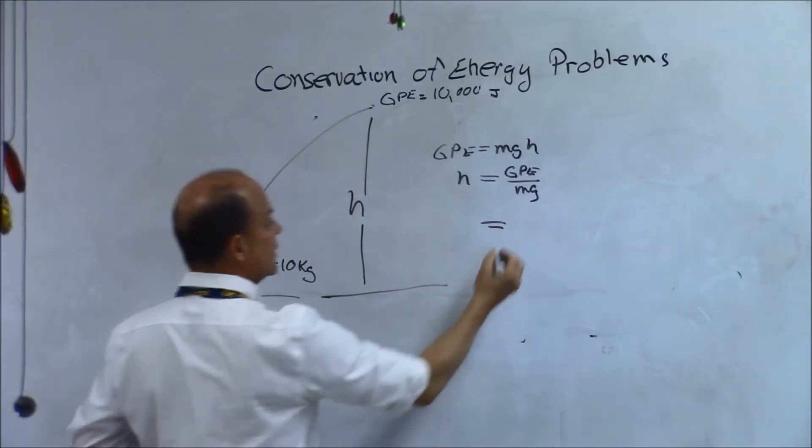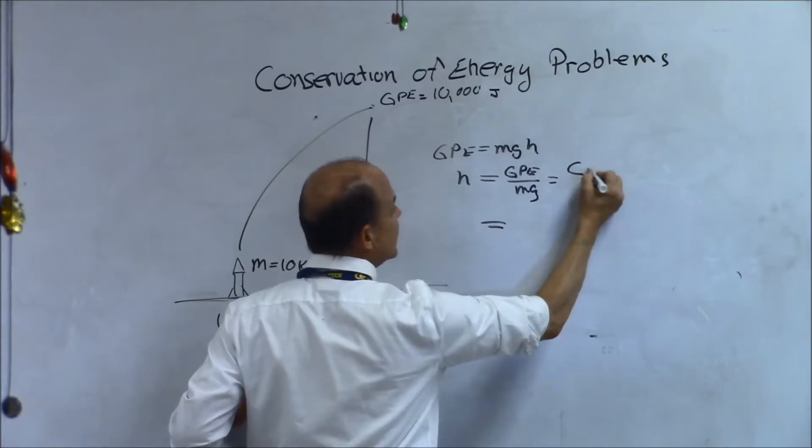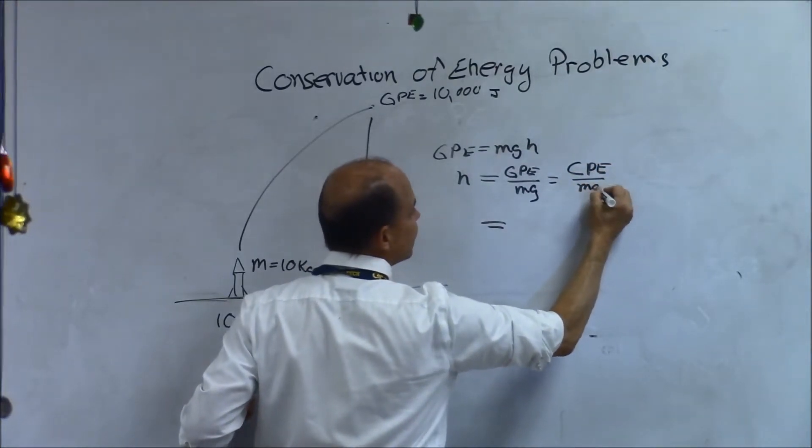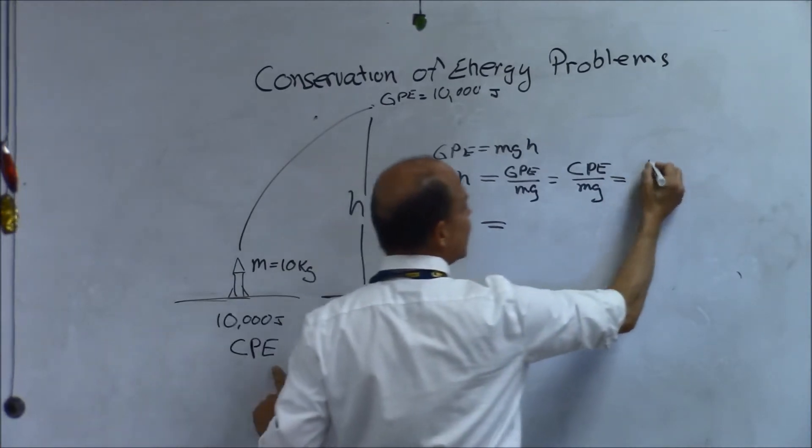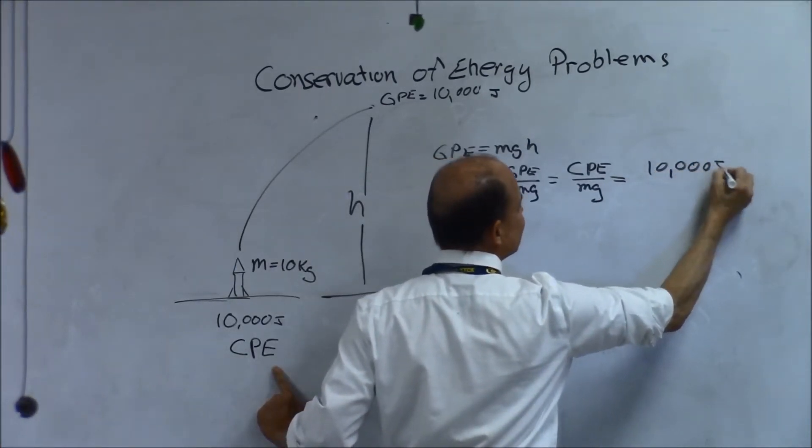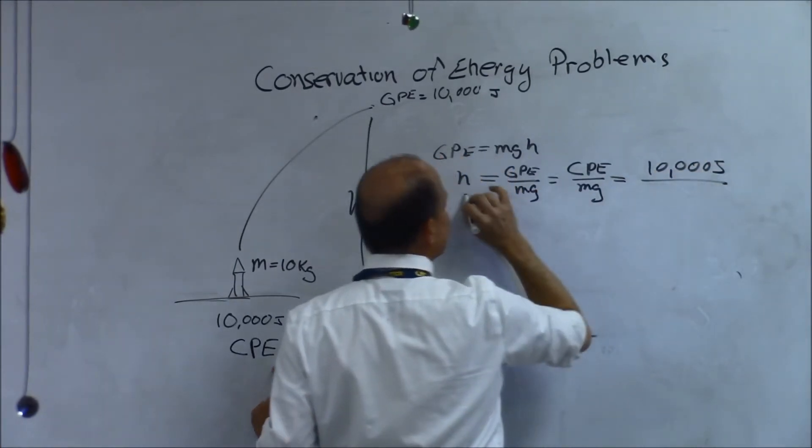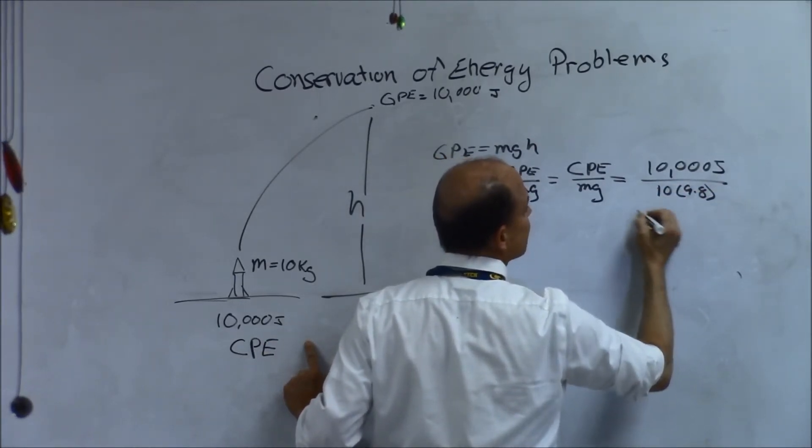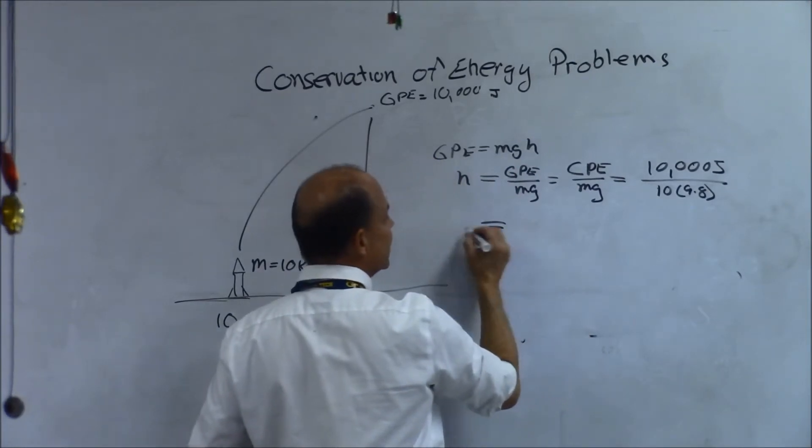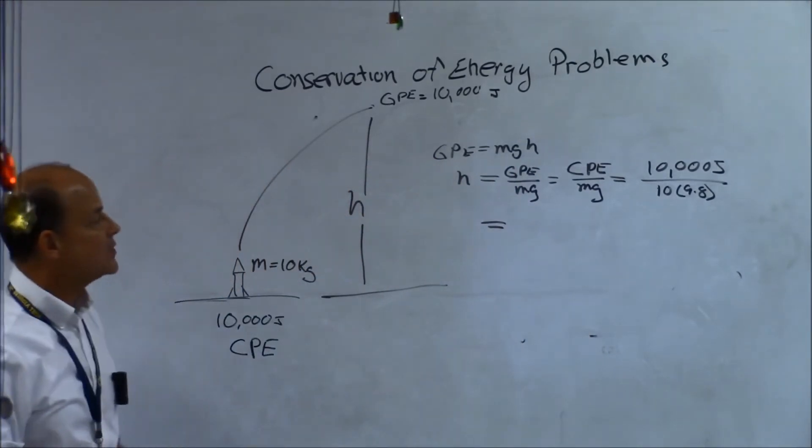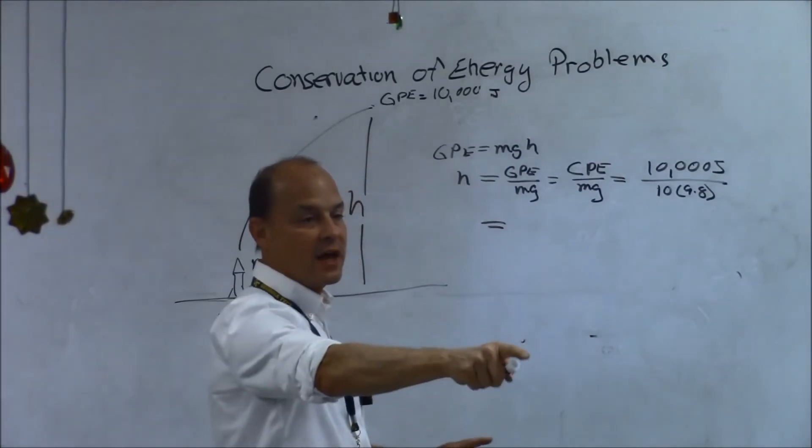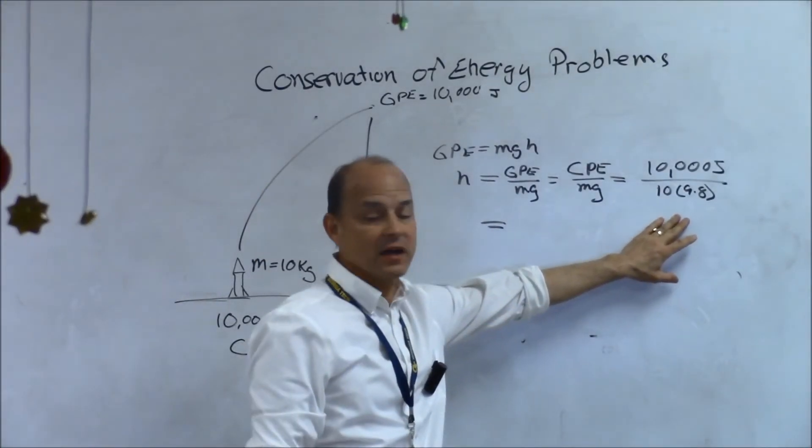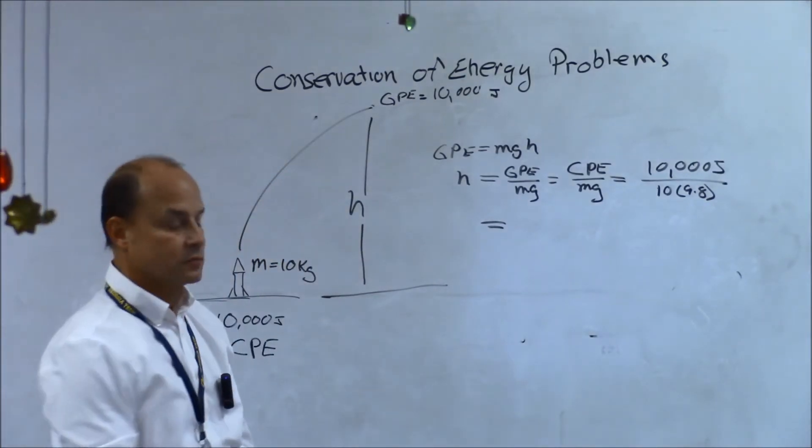Well, if GPE equals CPE, and if CPE equals 10,000, then H is going to equal 10,000 divided by the mass of the rocket times 9.8, and this is the equation for finding the height. So 10,000 divided by what you just said, dividing out gravity and also including the mass of the rocket, right? So you need the mass.